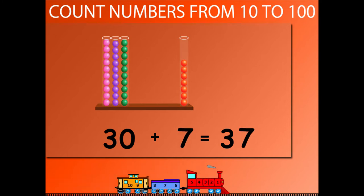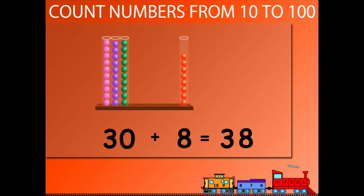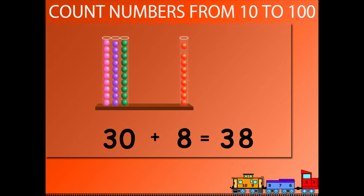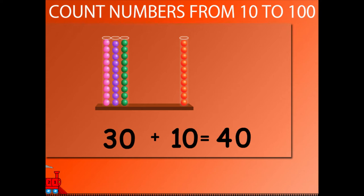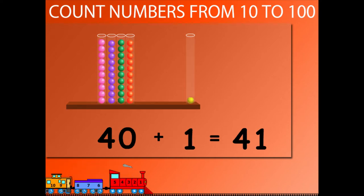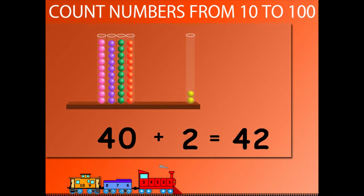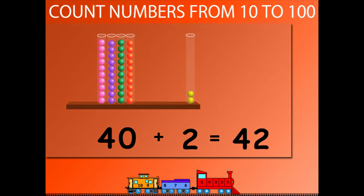30 plus 8 is equal to 38. 30 plus 9 is equal to 39. 30 plus 10 is equal to 40. 40 plus 1 is equal to 41. 40 plus 2 is equal to 42.